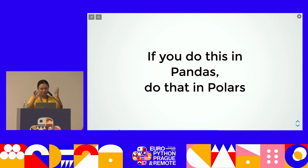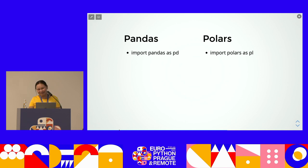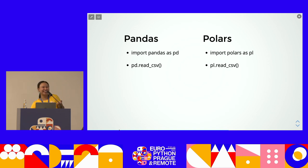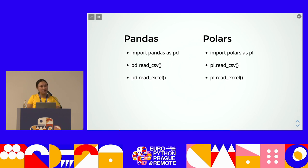Here's a comparison slide — if you do this in pandas, do this in Polars. Import pandas — we all know that `pd` is pandas. Polars' standard alias is `pl`, so `import polars as pl`. You can see `read_csv` still works: `pd.read_csv`, `pl.read_csv` — it will still work. It's just using a different library. `read_excel` will still work too.